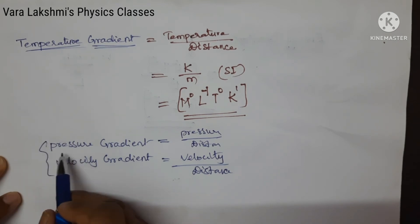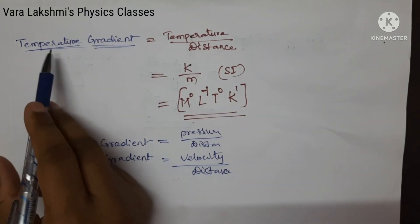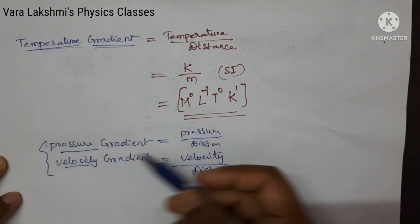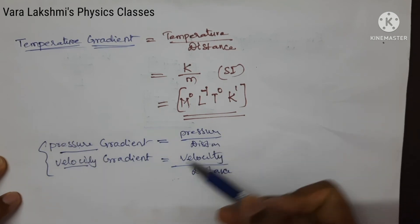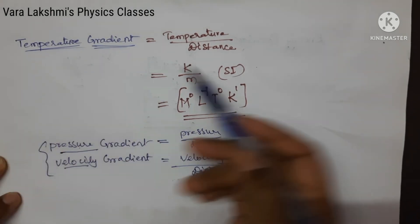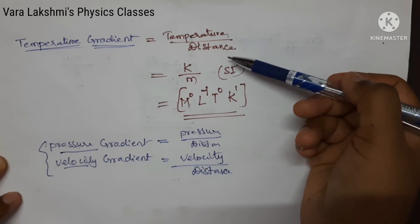Whenever you want to find the pressure gradient or velocity gradient or temperature gradient, pressure is pressure upon distance, velocity is velocity upon distance, temperature is temperature upon distance.